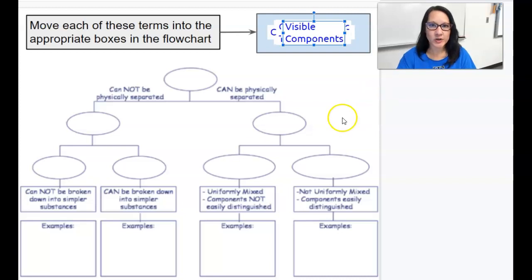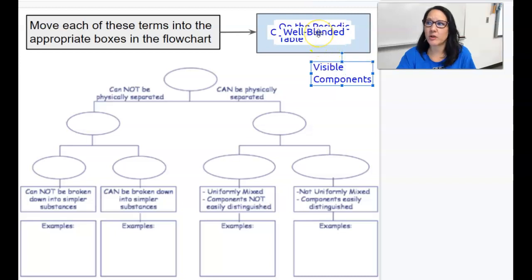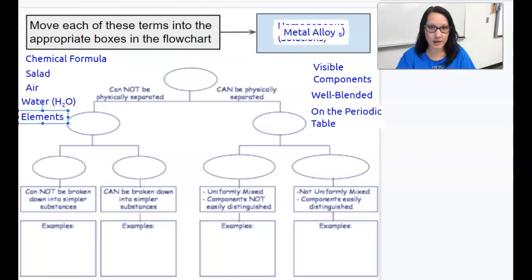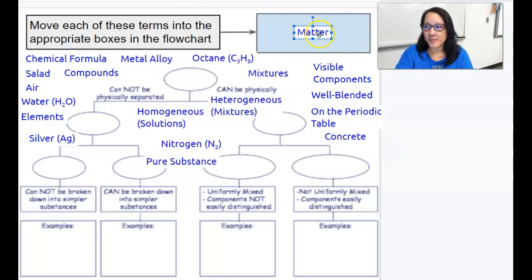Here we have a flowchart to review classifying matter. In the box up here are the different things that you should place in the chart. Some things might be a little bit challenging, like where are visible components going to go? Well-blended. So you can kind of spread things out around the chart so you can see them a little better.